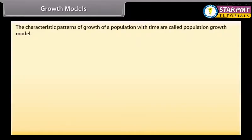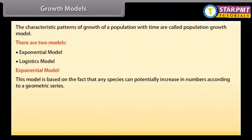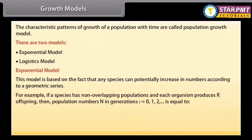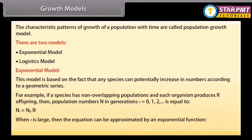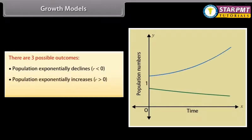The characteristic patterns of growth of a population with time are called population growth models. There are two models: the exponential model and the logistic model. The exponential model is based on the fact that any species can potentially increase in numbers according to a geometric series. If a species has non-overlapping populations and each organism produces R offspring, then the population N at generation t equals N(t) = N₀ × R^t. When t is large, this can be approximated by N(t) = N₀e^(rt). There are three possible outcomes: population exponentially declines, population exponentially increases, or population does not change.